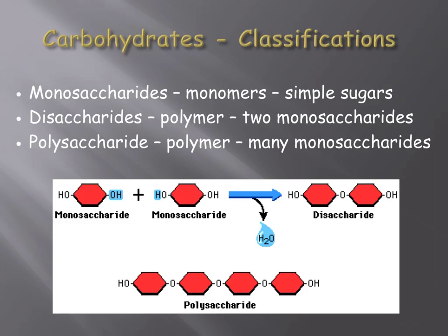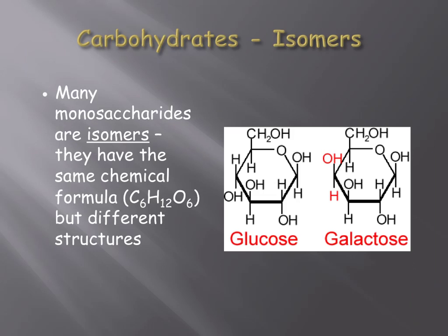Starch is an example of a polysaccharide. It's made up of chains of glucose, hundreds in length, and is used for long-term storage of energy in plants. Many monosaccharides have the same chemical formula — they're made up of six carbon atoms, 12 hydrogen atoms, and six oxygen atoms — but those atoms are arranged differently. Due to this, these monosaccharides are called isomers. The prefix iso means something is the same; in this case, you have the same atoms just arranged differently.